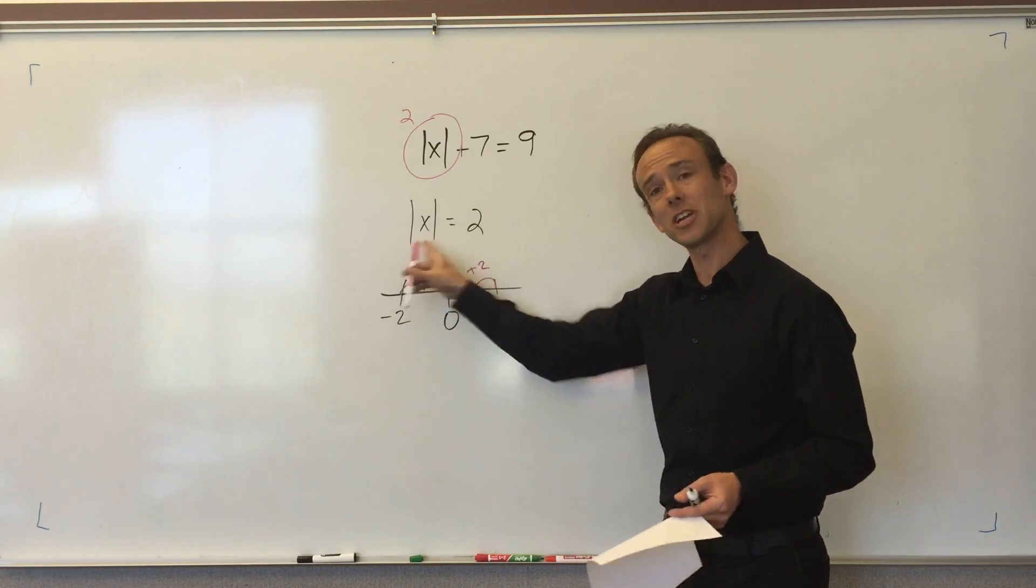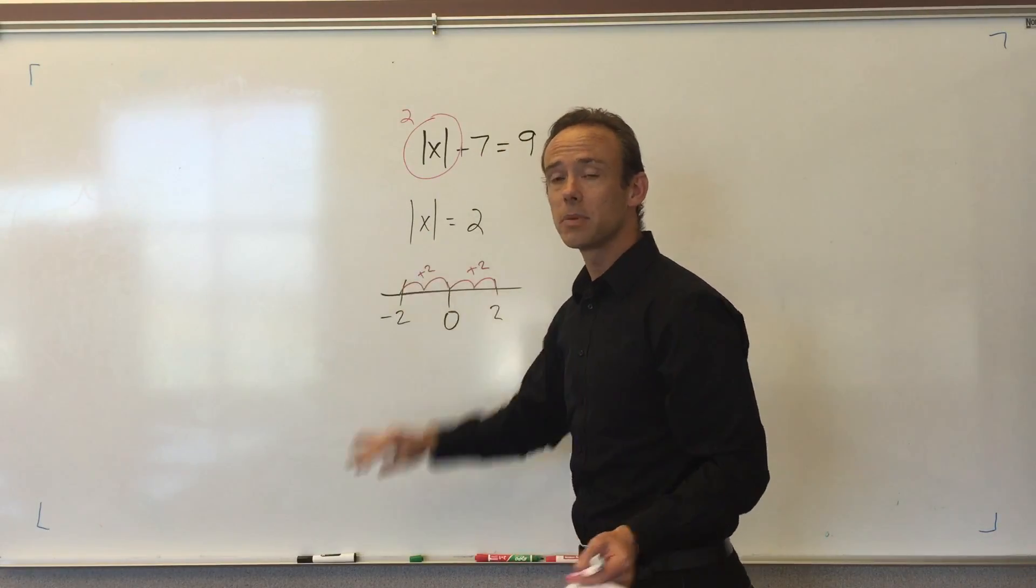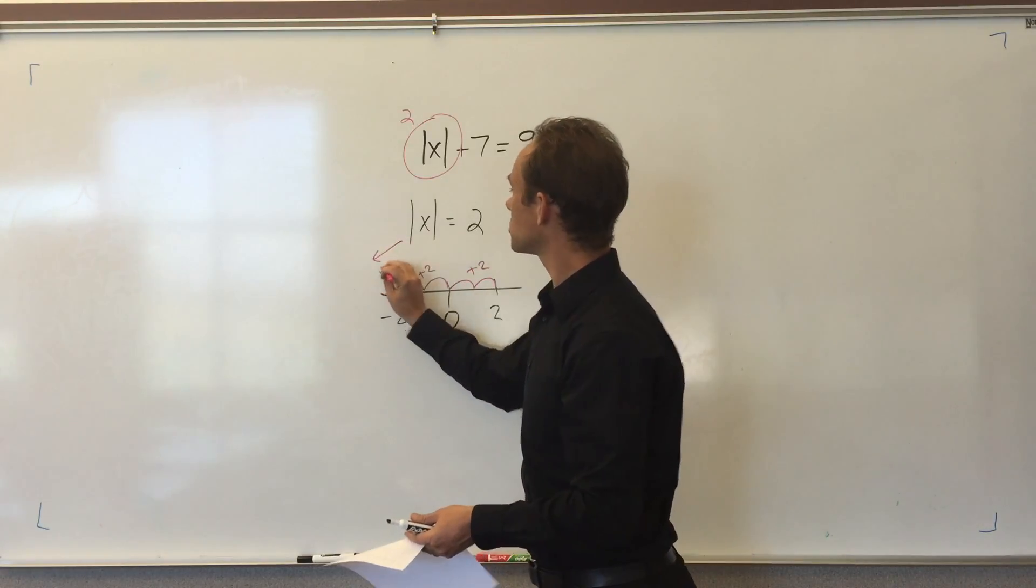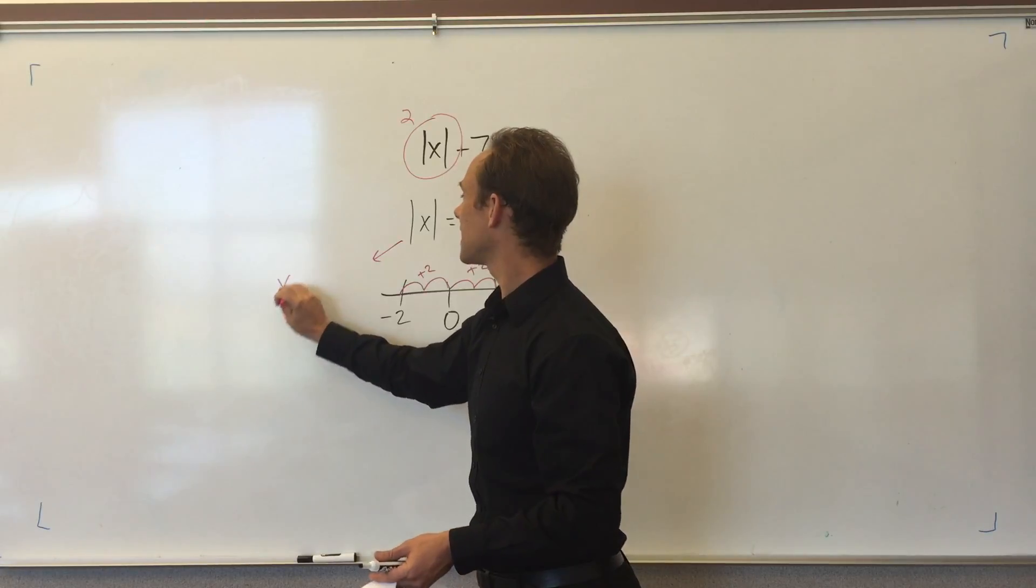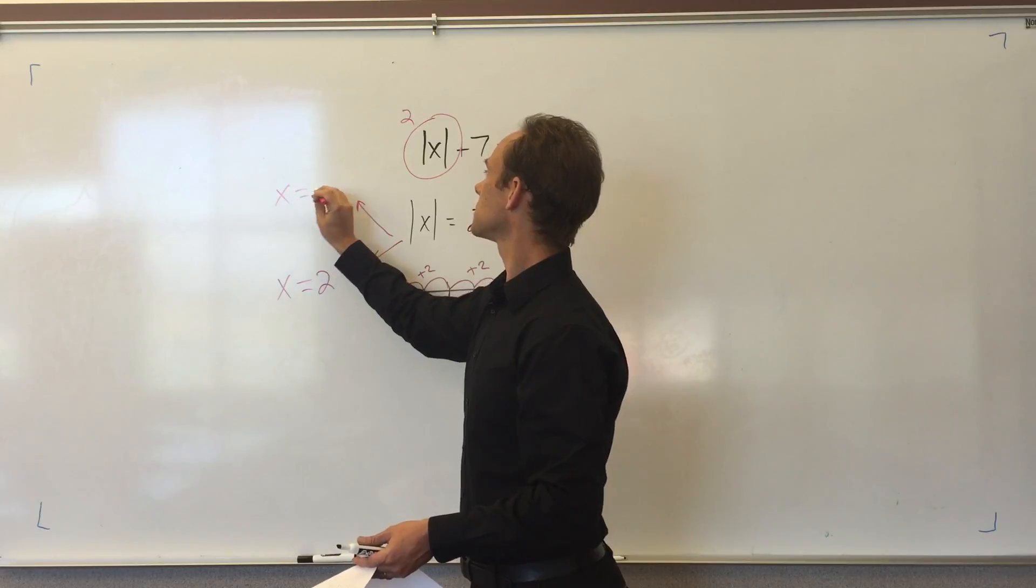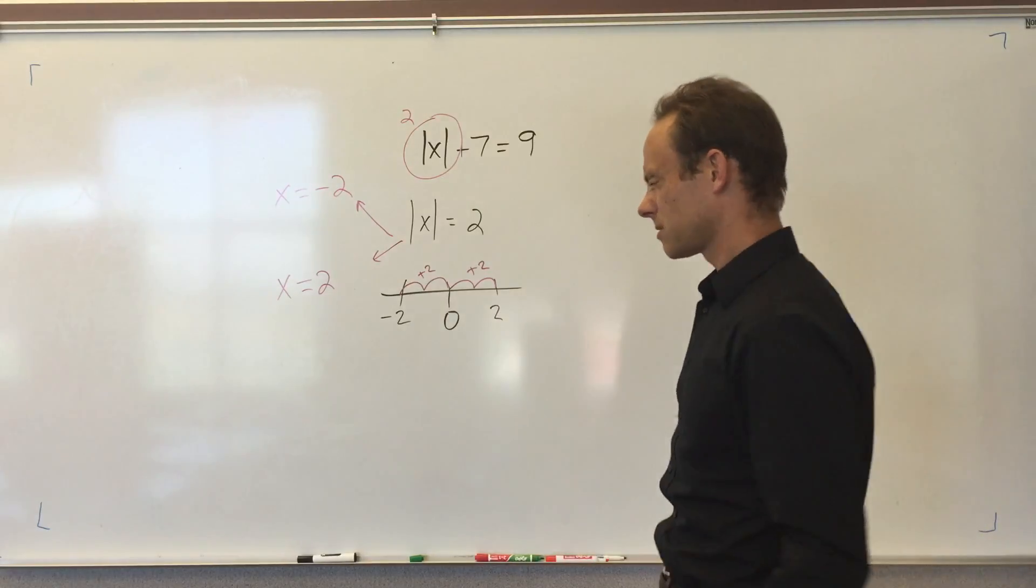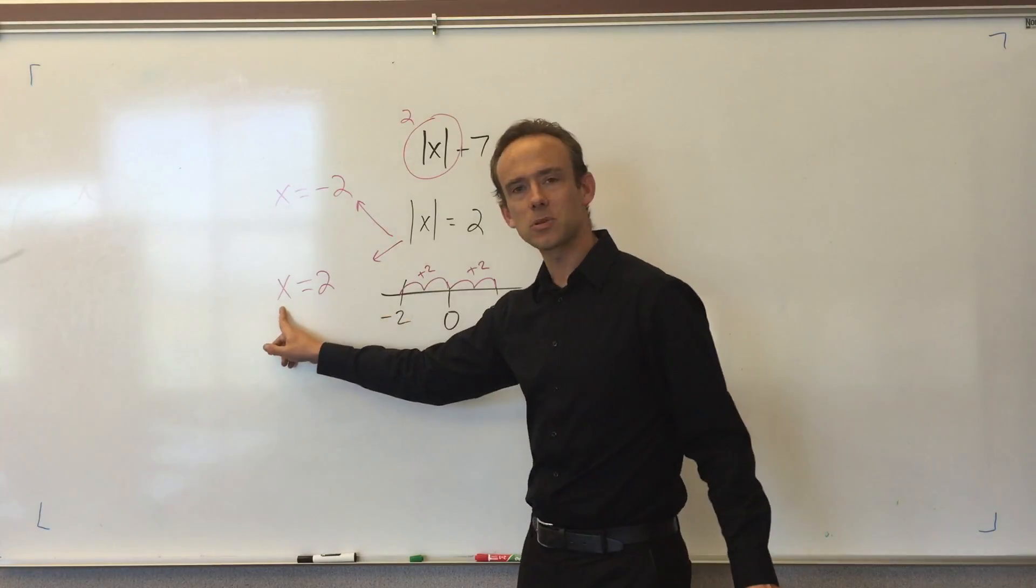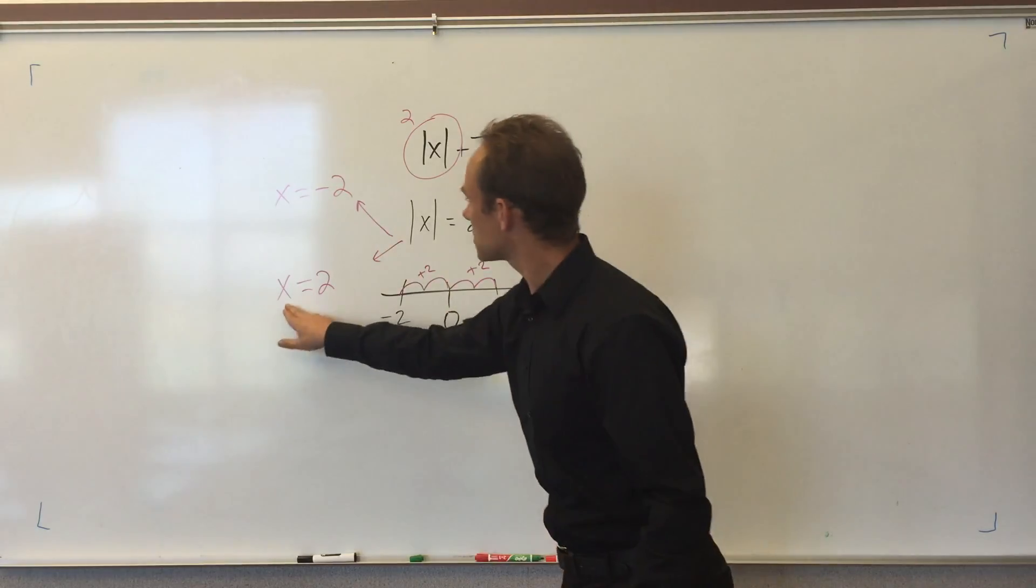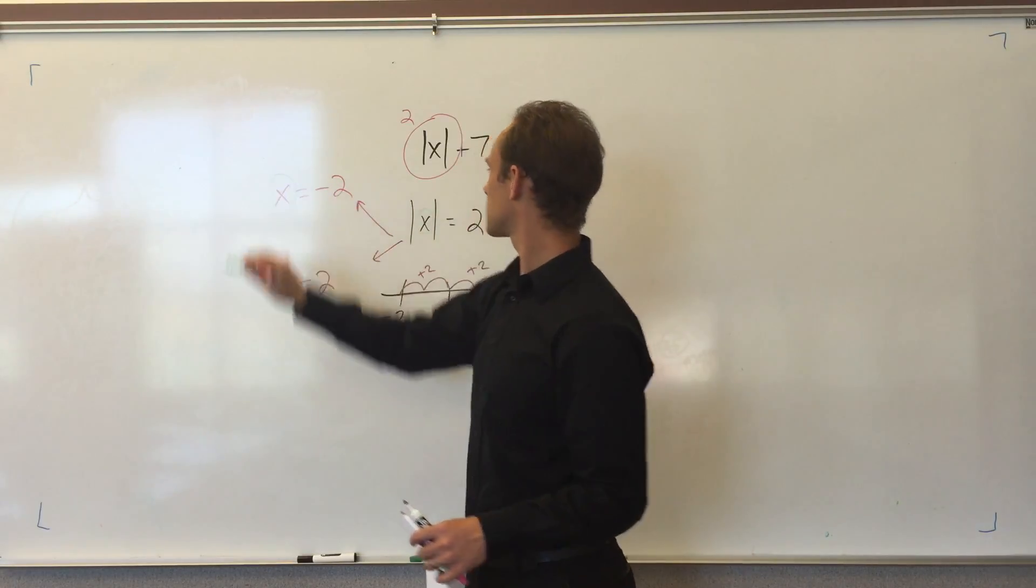I want you to rewrite this as two equations because we got two possibilities. I'm going to write two equations. I'm going to say x is equal to 2, and also x is equal to negative 2. Notice what I'm doing: the absolute value signs, that giant 11, it's not there anymore because I'm talking about what's inside the absolute value sign.